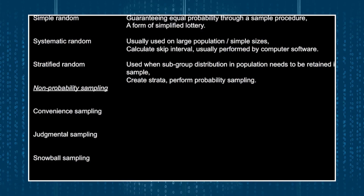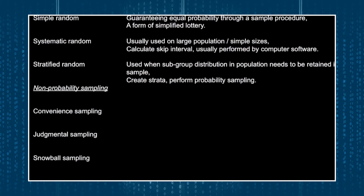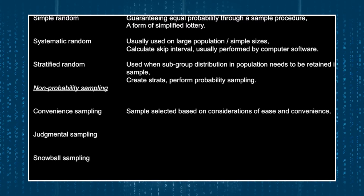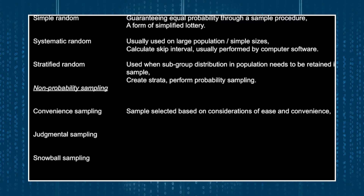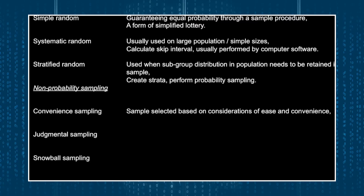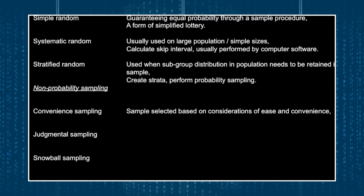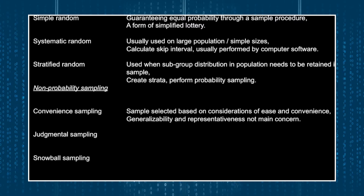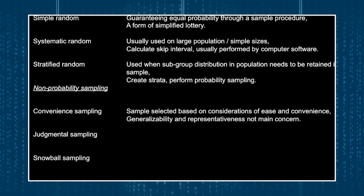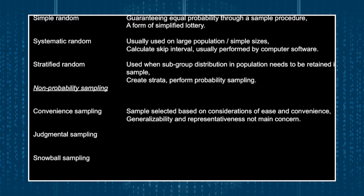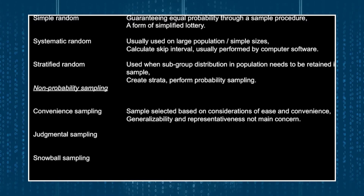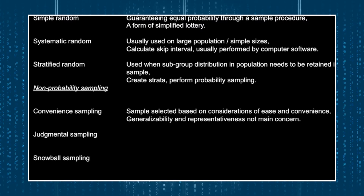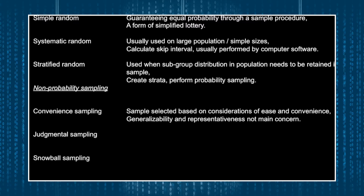The first is convenience sampling. This basically means that the researcher takes a sample based on considerations of what is easy and convenient. If I need 10 people as a sample, and I happen to have 10 people in this class, I can just take these 10 people — that is a convenience sample. Is this sample truly representative of the entire population? Well, it doesn't matter in some situations. If your population is very homogenous, or if representativeness is simply not a major concern — like in certain exploratory studies — then a convenience sample is perfectly acceptable.